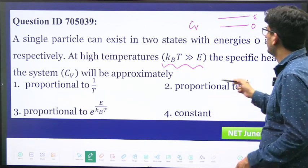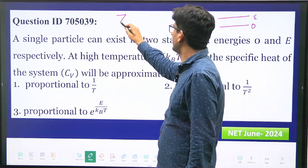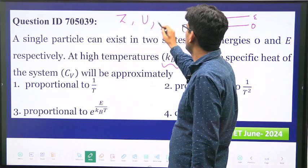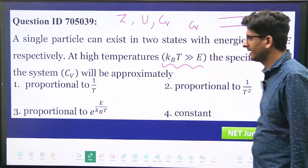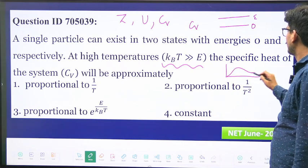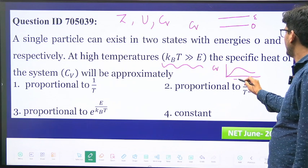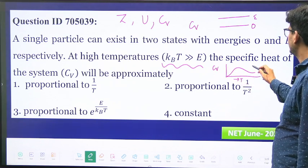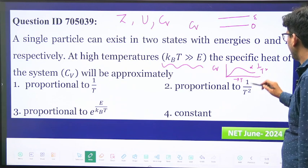We know how to go about this: we will write partition function, then we will write U, then we will write Cv, that is the sequence. But we already know that the specific heat goes like this: this is Cv and this is T, and this side it is proportional to 1 by T square at high temperature.